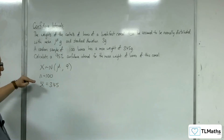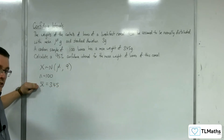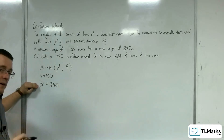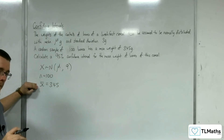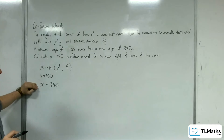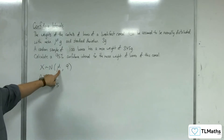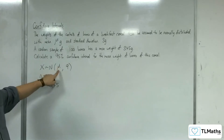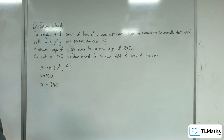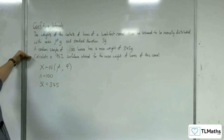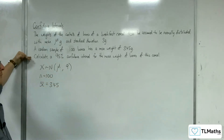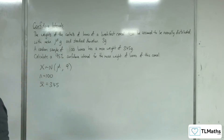This is the mean weight of the sample. This is the mean weight of the population that we don't know. Calculate a 95% confidence interval for the mean weight of boxes of this cereal.